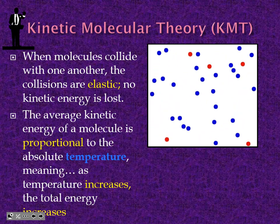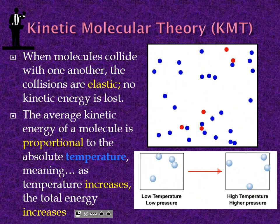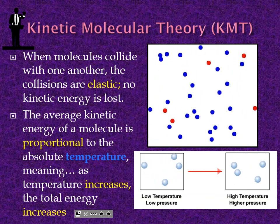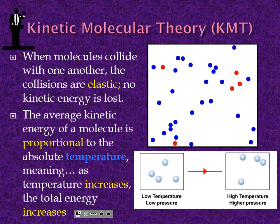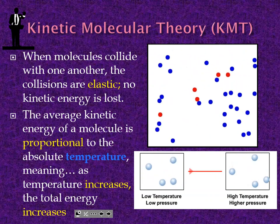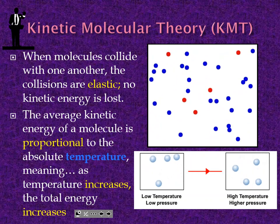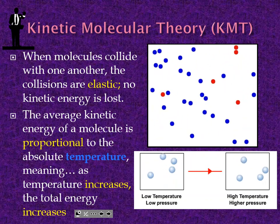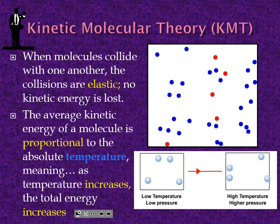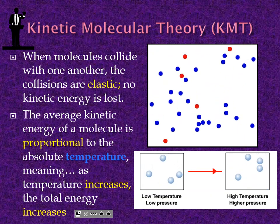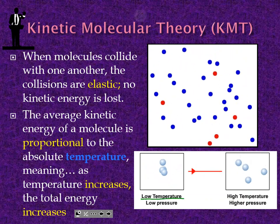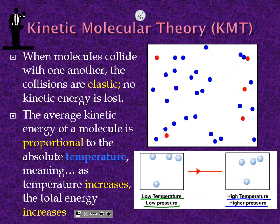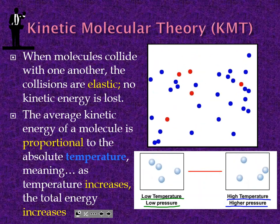Temperature affects the average kinetic energy of the particles. Higher temperature means they're moving faster and have more kinetic energy on average. We say average kinetic energy because not all particles move at exactly the same speed — kinetic energy varies from particle to particle. But the average kinetic energy of the system is proportional to the temperature. At low temperature, particles move very slowly, which equates to lower pressure because they're not hitting the walls as fast or as often. Higher temperature means higher pressure — more collisions, faster collisions with the walls.